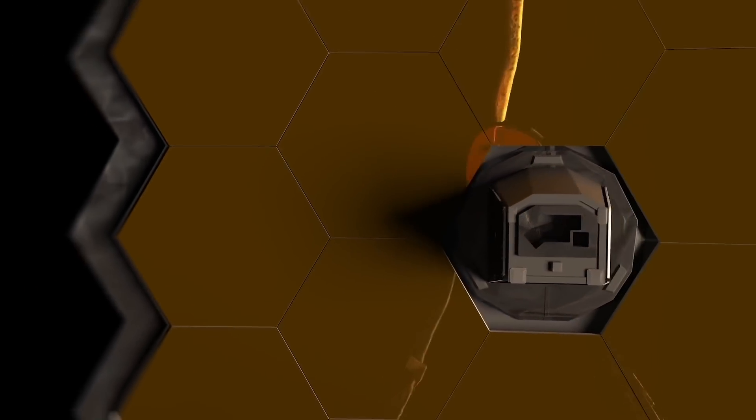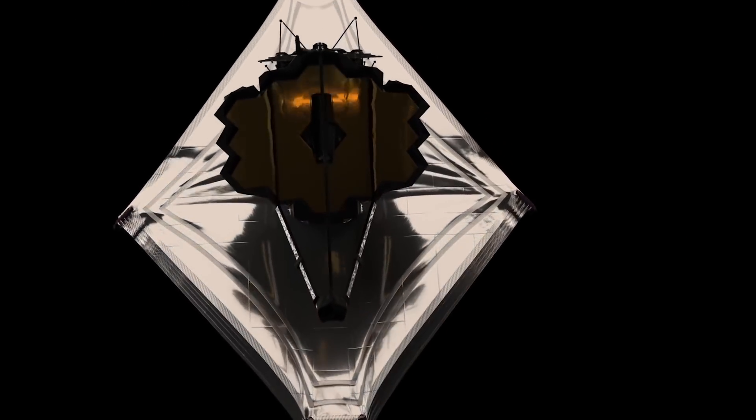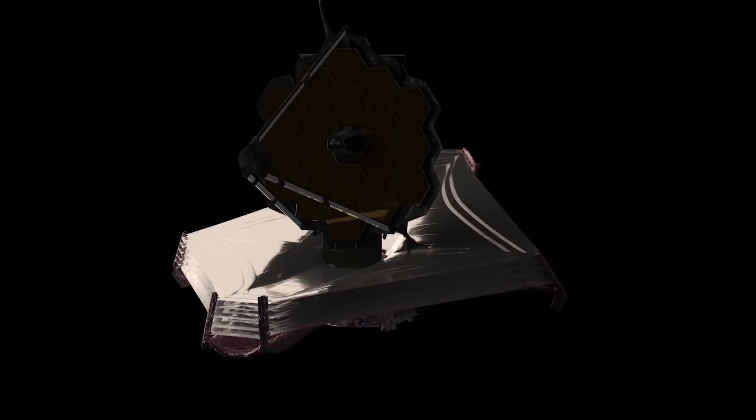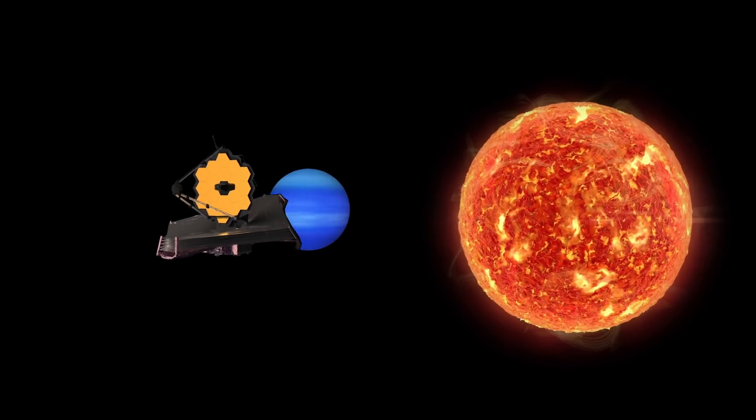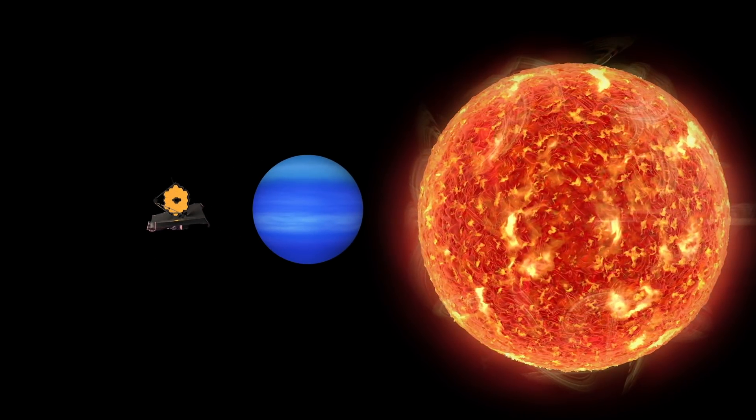But the James Webb Telescope will possibly transform exoplanet studies in the search for biosignatures in the atmospheres of alien worlds via transmission spectroscopy. It is the most basic technique for analyzing samples in the infrared. Light from the host star passes through the exoplanet to be registered by the James Webb telescope's detector.